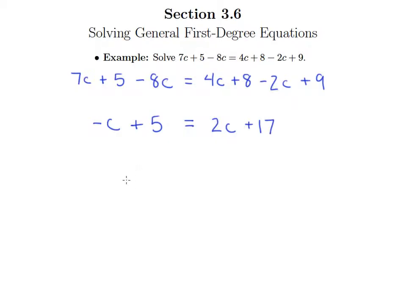Okay, so now what we need to do is get variables on one side, constants on the other. And it doesn't matter which side gets the variables, which side gets the constants. I'm going to choose to add c to both sides, so that the c's are on the right side. And I'm just going to do that because I like positive coefficients on my c, and if I move the smaller of the terms, so negative c is less than 2c, that will ensure that this is a positive coefficient.